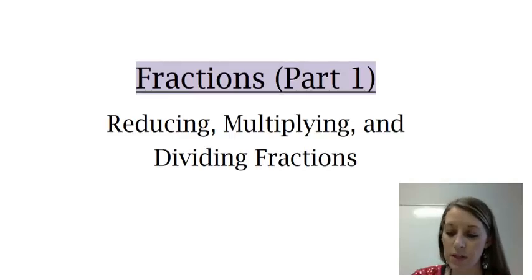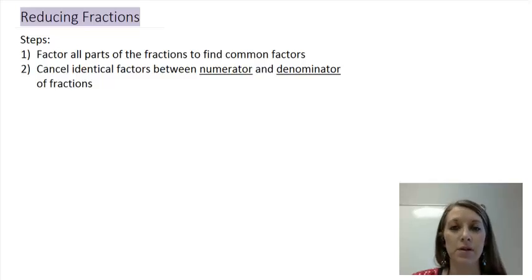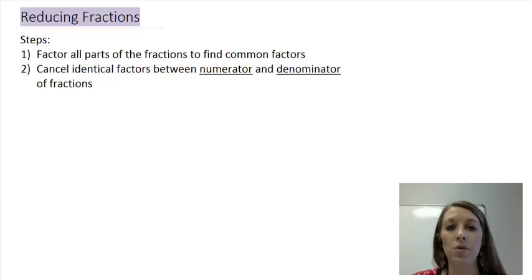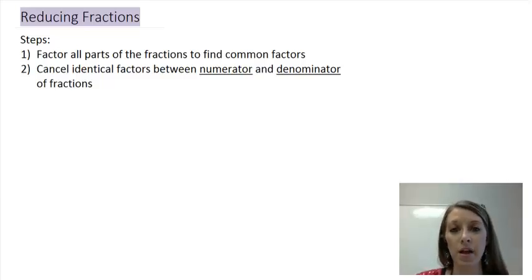The first thing we're going to cover is reducing fractions, and I have included the steps here. This is the easiest thing you can possibly do with fractions. Basically, you want to factor every part of the fraction — the top part, called the numerator, and the bottom part, called the denominator — then see what factors they have in common and reduce any identical factors.